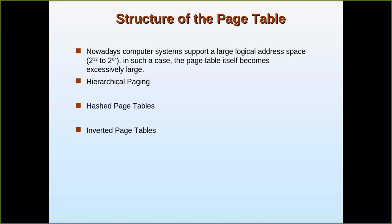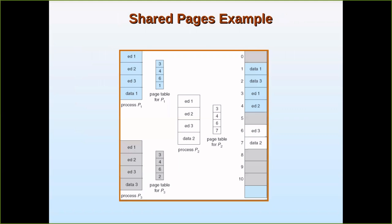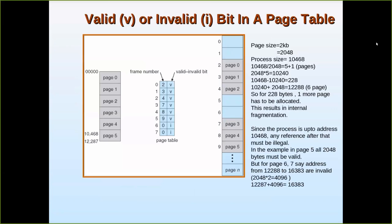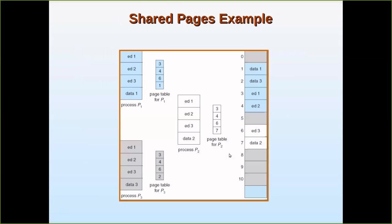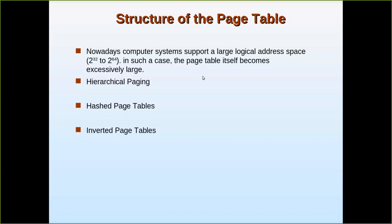Whereas if the page table has more than 256 entries — if the user's logical address space is large — then it is not possible to use the CPU registers. So we have to store the page table itself in the main memory. If the page table is very big, there are three techniques: hierarchical paging, hashed page tables, and inverted page tables.